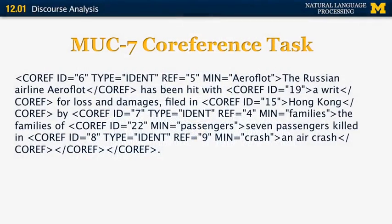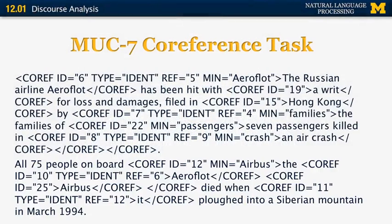There was an annual competition called MUC that had a specific task on coreference extraction. For that evaluation, participants were provided by NIST with a large collection of documents annotated for coreference manually. For example, the sentence 'The Russian airline Aeroflot has been hit with a writ for losses and damages found in Hong Kong' — every entity is marked with a number. The Russian airline Aeroflot is ID 6, Hong Kong is ID 15, and so on. The goal is to figure out which of those entities refer to one another.